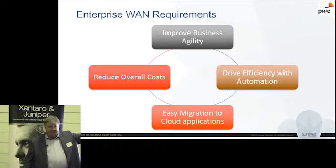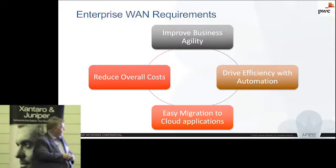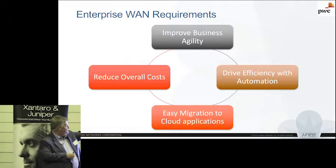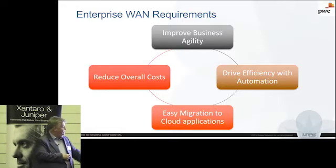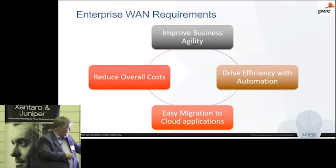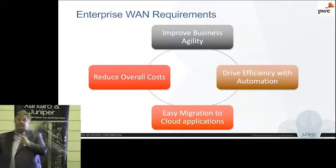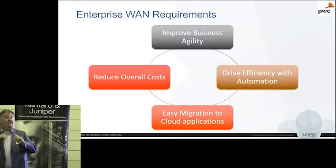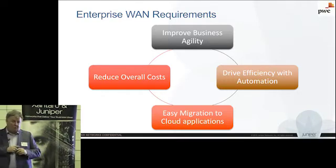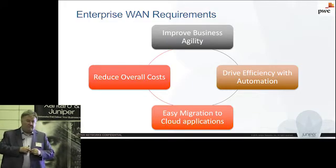The good thing is it's got their name on it — it's not us saying this, it's them and their research. Reduction of costs, improvement of overall agility, driving efficiency with automation, and easy migration to cloud apps — that's what's on the mind, according to PWC, of enterprise organizations looking at the general direction of travel for them.